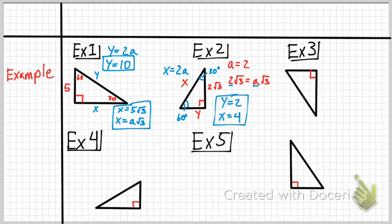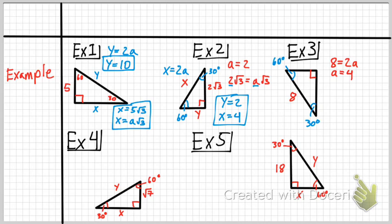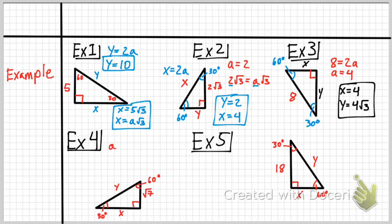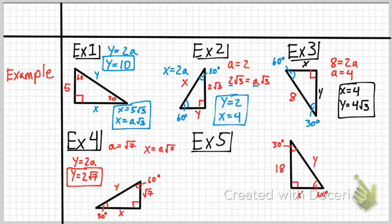Sometimes these can be simple, sometimes a lot harder. In example 3, the hypotenuse equals 8, so 8 equals 2A, giving A equals 4. Therefore x equals 4 and y equals 4√3. In example 4, A equals √7, so the hypotenuse y equals 2A, giving y equals 2√7. Then x equals A times √3, which is √3 times √7, so x equals √21.